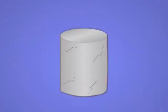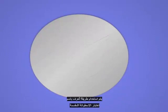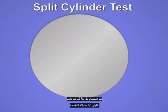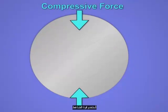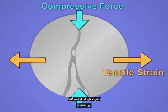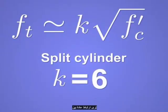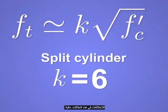To test the tensile properties of concrete, a method known as the split cylinder test is often used. A compressive force is applied, resulting in a uniform horizontal tensile stress in locations away from the applied load. A correlation is typically seen between the tensile and compressive strengths, although typical coefficients of variation for these relationships are high.